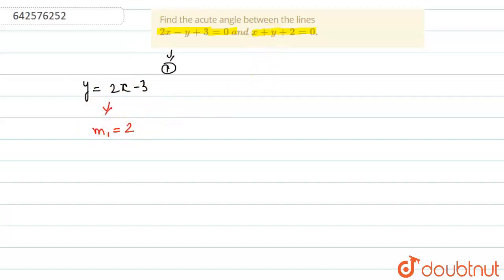And for the second line, the line is y is equal to minus x minus 2. So for this, m2 is equal to minus 1.